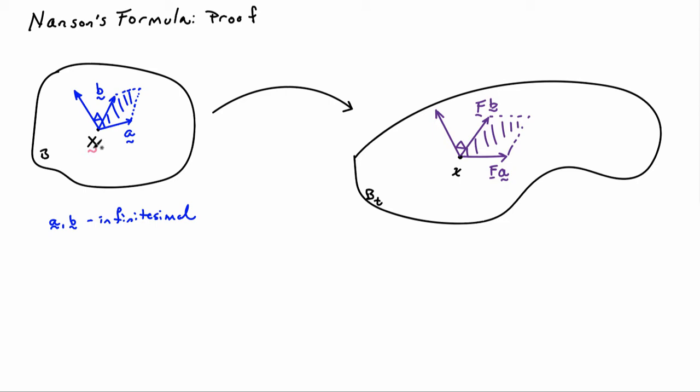We start by looking at a point X and two infinitesimal vectors A and B. The cross product of A and B will define the area of the parallelogram bounded by A and B. I want to look at how that area element transports into the deformed configuration. Big X maps to little x, the vector A maps to FA, and the vector B maps to FB. So in the deformed configuration, I have a new parallelogram with a new area, and the relationship between those areas is what Nanson's formula helps us understand.